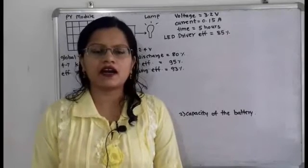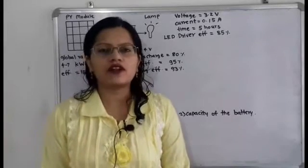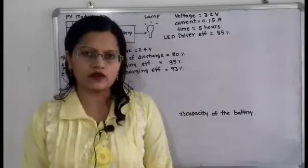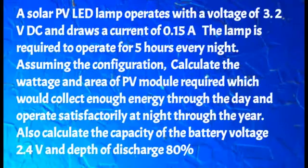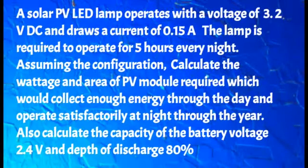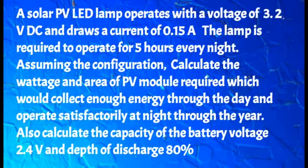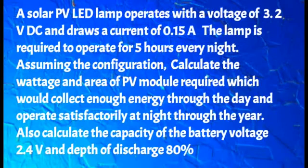Hello friends, this is Priyanka. Today we are going to solve a problem on solar photovoltaic module. A solar photovoltaic LED lamp operates with a voltage of 3.2 volt DC and draws a current of 0.15 ampere. The lamp is required to operate for five hours every night. Assuming the configuration of the figure, calculate the wattage and area of the photovoltaic module required.